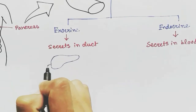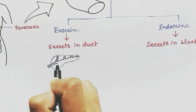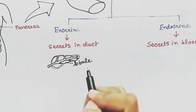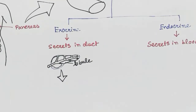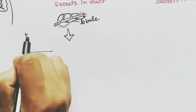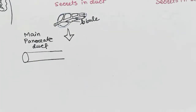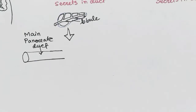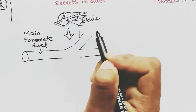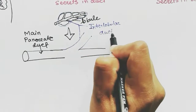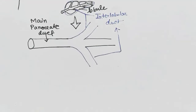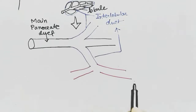Zooming into the ducts of the pancreas: this is the main pancreatic duct. It has some branches which form the lobules — they are present between two lobules, so they are called interlobular ducts. These interlobular ducts also have branches that go inside the lobules.